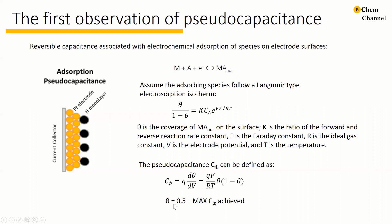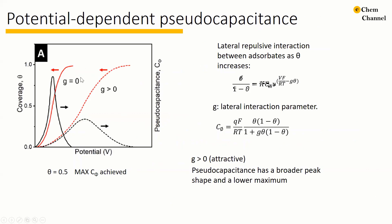When theta equals 0.5, the maximum C_phi can be achieved. This curve illustrates the relationship between the potential, the coverage of species A on surface M, and the pseudocapacitance. So when theta is 0.5, the adsorption pseudocapacitance reaches its maximum.